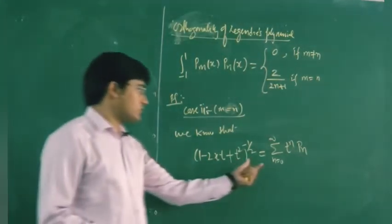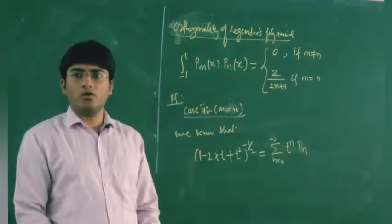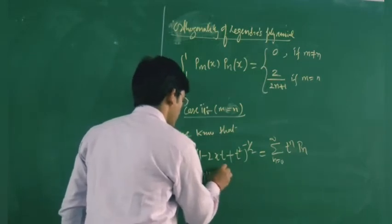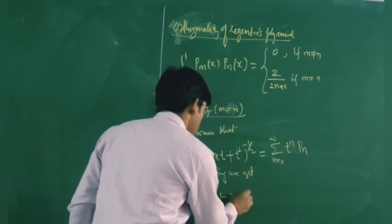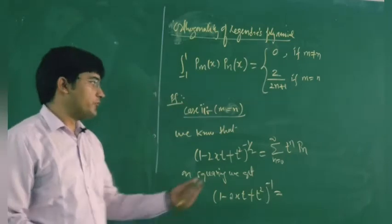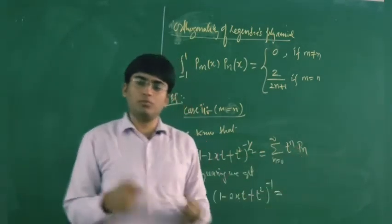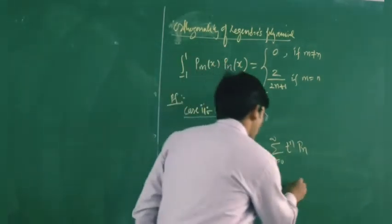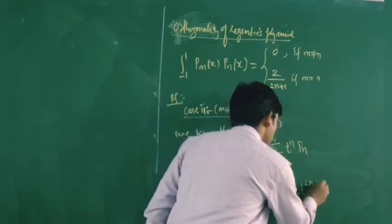We know the generating function identity: (1 - 2xt + t²)^(-1/2) equals the sum over n of t^n · P_n(x). Squaring both sides, the left-hand side becomes (1 - 2xt + t²)^(-1). On the right-hand side, squaring the sum gives terms like t^m · P_m times t^n · P_n, expanding as A² + B² + 2AB.